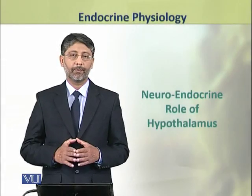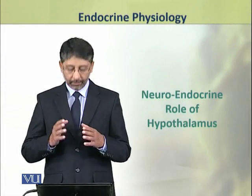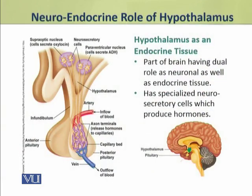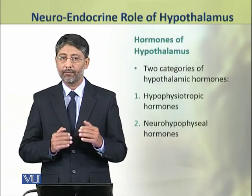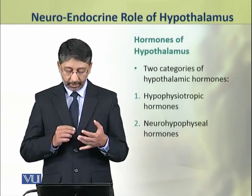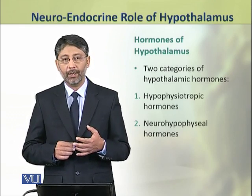Dear students, in this topic we shall discuss the neuroendocrine role of hypothalamus. The hypothalamus is the part of brain which has dual role as neuronal as well as endocrine tissue. It has specialized neurosecretory cells which produce hormones. There are two categories of hypothalamic hormones: first are the hypophysiotropic hormones, and the other are the neurohypophysial hormones.